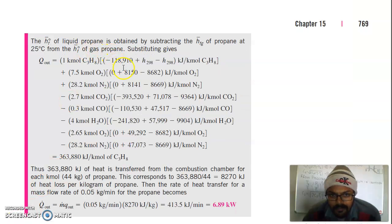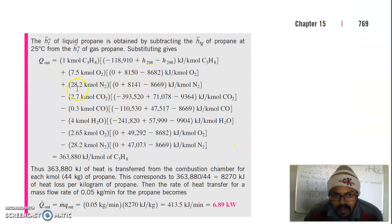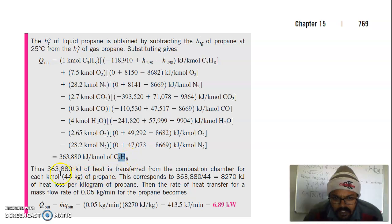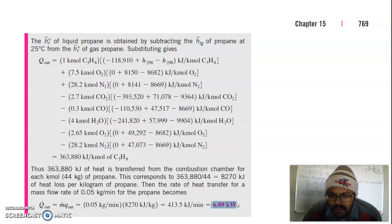After solving the energy balance for all reactant and product terms, the result gives the total heat released in kJ per kmol of C3H8. Dividing by 44 kg/kmol converts this to kJ/kg of propane. Multiplying by the mass flow rate of 0.05 kg/min yields the rate of heat transfer of approximately 6.89 kW from the combustion chamber.